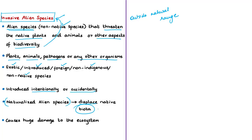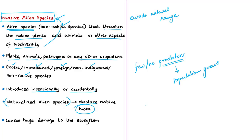When people purposely or accidentally bring non-native or alien species into new areas, these alien species have few or no natural predators to keep their population in check. Without natural predators to feed on that invasive species, its population grows invariably. This is called a biological invasion. Biological invasion by alien species is recognized as one of the major threats to native species and ecosystems. The effects on biodiversity by invasive alien species are enormous and often irreversible.